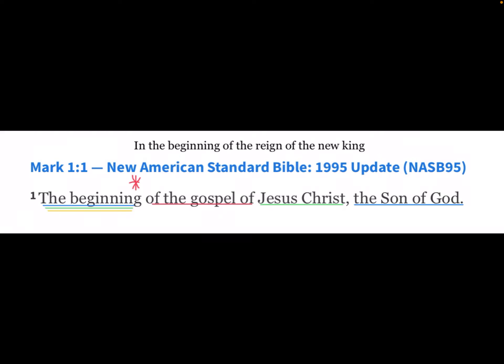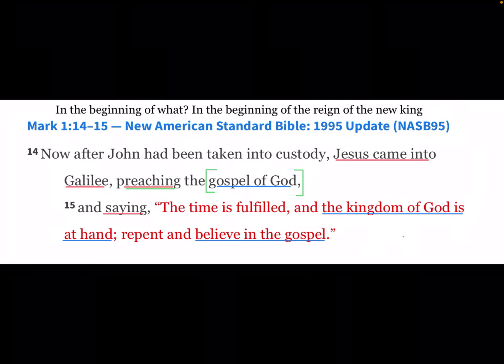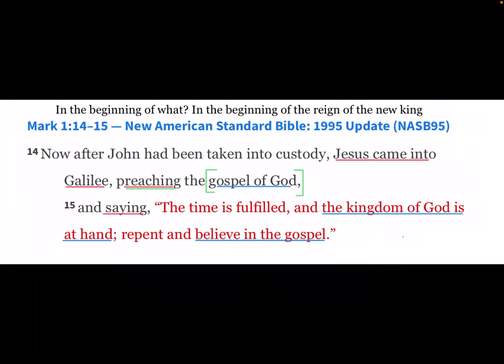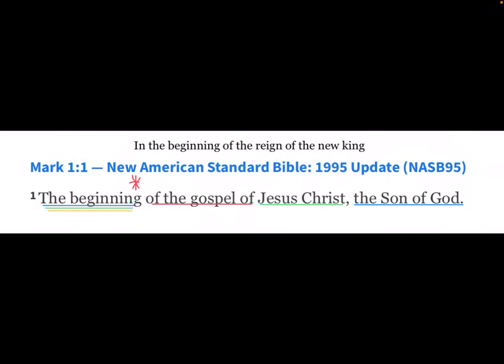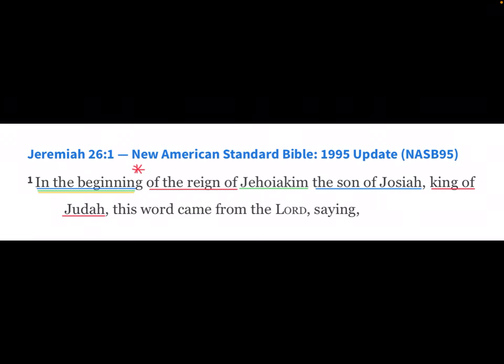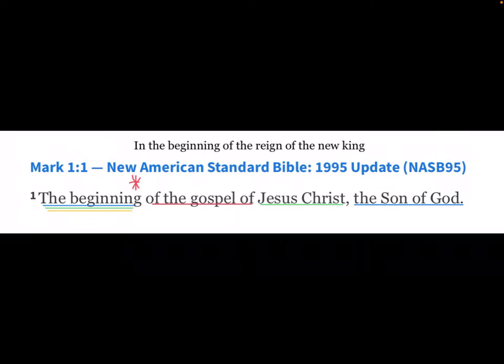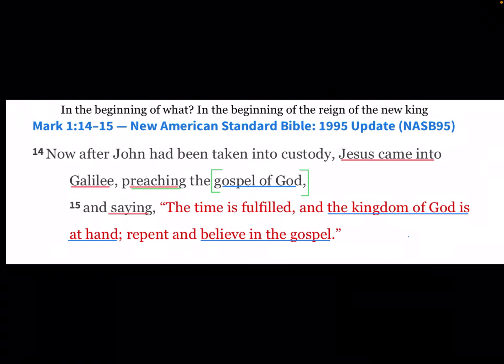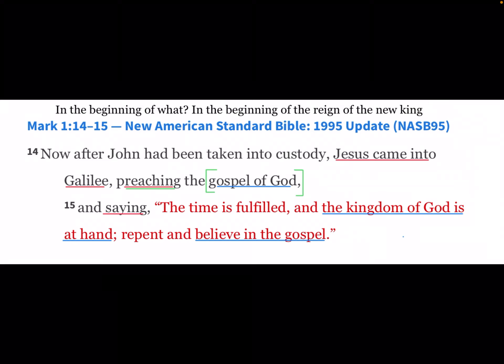What is the gospel? Well, according to Mark, just a few verses later, he says Jesus came into Galilee preaching the gospel of God, saying, 'The kingdom of God is at hand.' So in the beginning of the kingdom of God — Jesus Christ, the Son of God. In the beginning of the reign of the Son of God, Jesus Christ. It's the exact same usage we find in Jeremiah 26:1 — in the beginning of the reign of Jehoiakim the son of Josiah, king of Judah. The beginning of the reign of Jesus Christ, the Son of God, over the kingdom of God — the beginning of the reign of a new king. So it's all kingdom language at the beginning of a king's reign.